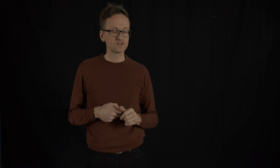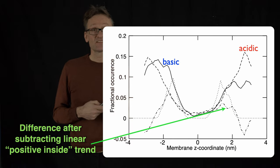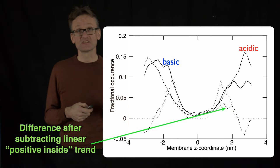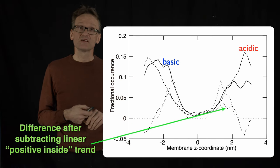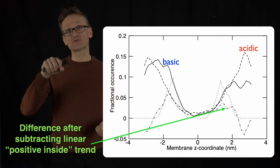Gunnar will later tell you about the positive inside rule. I'm not going to go through that in detail, but if you for a second buy that there are going to be more positive residues on the inside and more negative on the outside, we can calculate that statistics from the Protein Data Bank. This is over 10 years old results and we definitely see that trend.